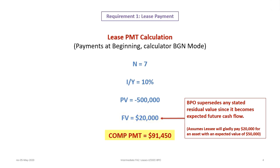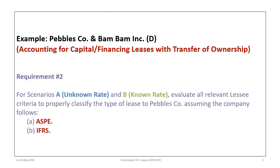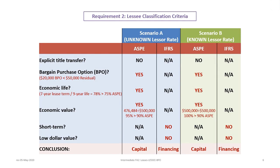When all is said and done, computing the payment gives us $91,450. We now move to the second requirement, evaluating scenarios A and B: in scenario A the lessor rate is unknown to the lessee, and in scenario B the lessor rate is known. We're going to evaluate all the relevant lessee criteria to classify this lease for Pebbles, assuming the company follows either ASPE or IFRS.